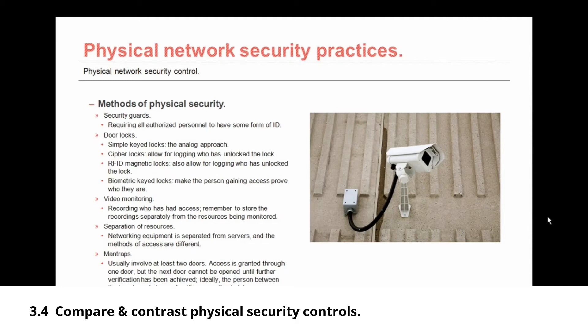Finally, in highly secure environments, a man trap may be implemented. A man trap usually involves at least two doors — access is granted through one door, but the next door cannot be opened until further verification has been achieved, and the person between the doors cannot go back out the other door. That means the person between the doors is trapped until some action or verification takes place.